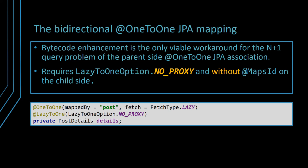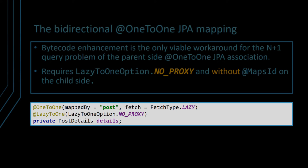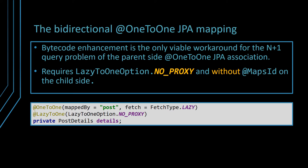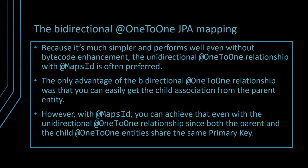Notice that for bytecode enhancement to work, you need to annotate the one-to-one association with the LazyToOne option NO_PROXY, and in Hibernate 5, this feature does not work if you also use mapsId. Because it's much simpler and performs well even without bytecode enhancement, the unidirectional one-to-one relationship with mapsId is often preferred. The only advantage of the bidirectional one-to-one relationship is that you can navigate the child association from the parent entity. However, with mapsId, you can do that even with unidirectional one-to-one relationships, since both the parent and the child one-to-one entities share the same primary key.